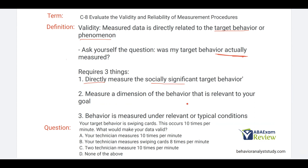One, you're directly measuring the socially significant target behavior — keyword: directly. Two, you're measuring the dimension of the behavior that is relevant to your goal. Picking what you're measuring is very important. If you need frequency and you're measuring duration, that's not going to be relevant to your goal; it's not going to be very valid. And three, behavior is measured under relevant or typical conditions, meaning we want to measure behavior when it typically occurs, when it might typically be punished or reinforced. It doesn't do us much good to measure behavior where that behavior never occurs or that learner is never in that situation.